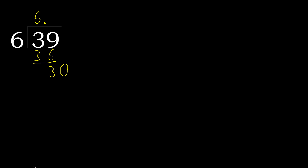6 multiplied by 6 is 36, which is greater. Multiply by 5 is 30 — exact. 30 minus 30 is 0, therefore finish.